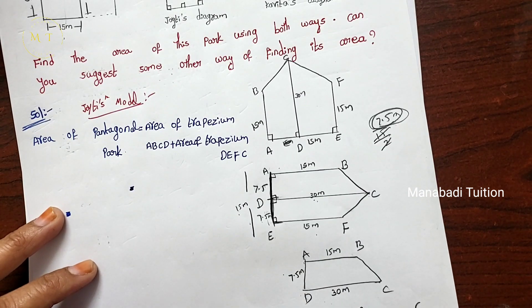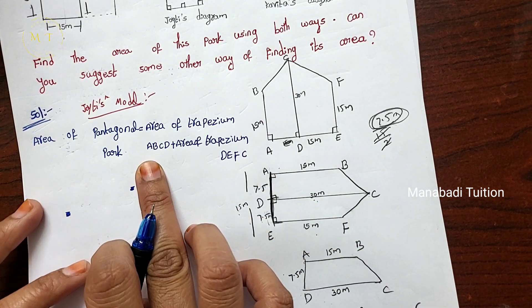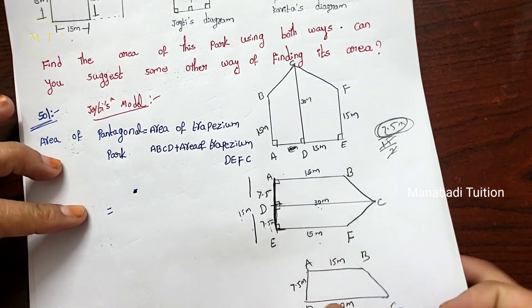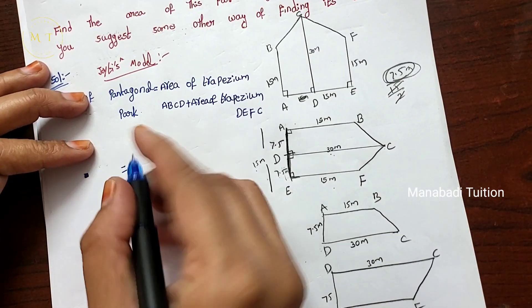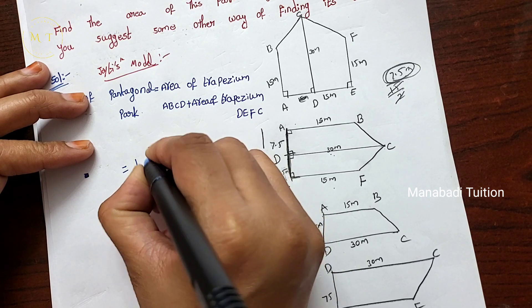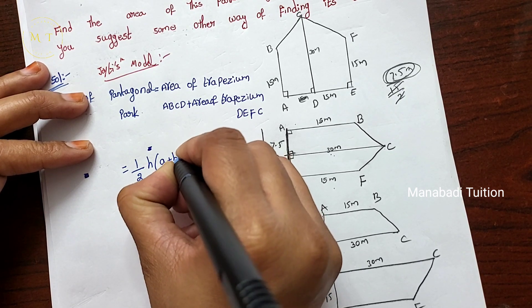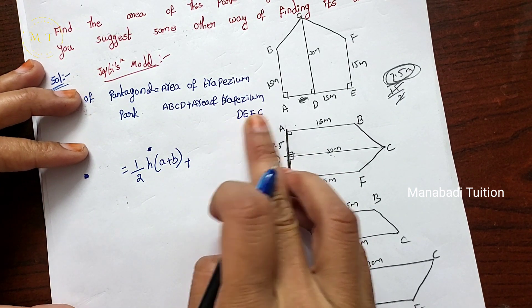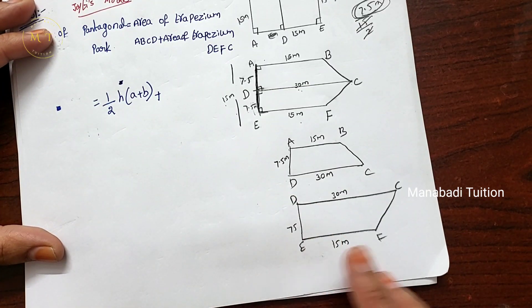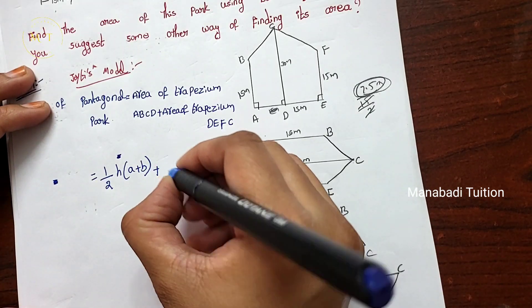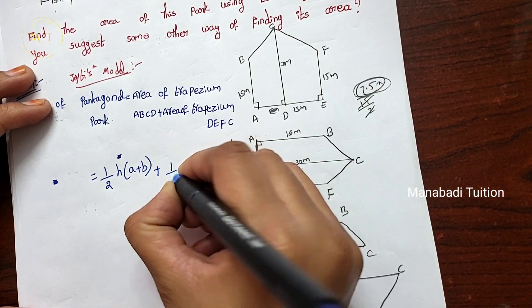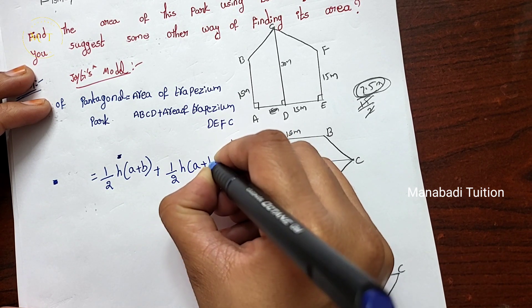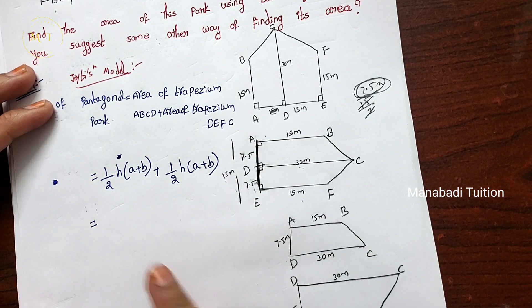So first, area of trapezium ABCD. The formula is ½ × H × (A + B). Next, area of trapezium DEFC — same formula: ½ × H × (A + B). Now we will find the area of both trapeziums.